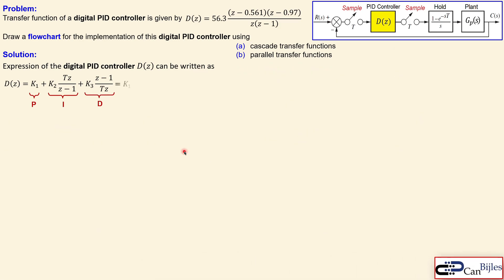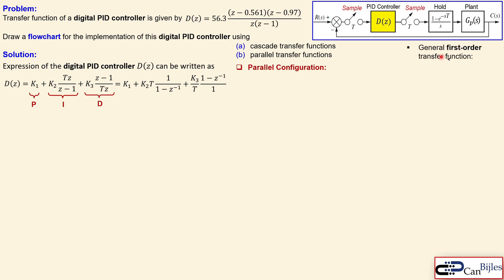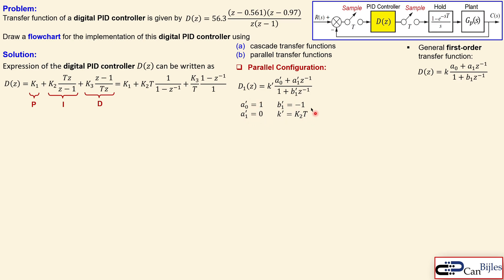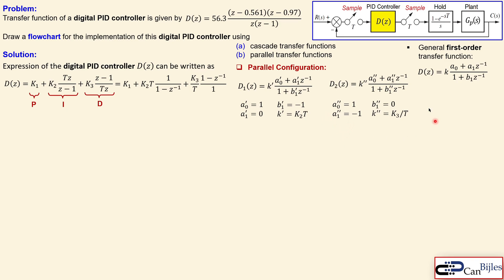Now looking at the parallel configuration, recall that the expression has three terms. The parallel configuration uses first-order transfer functions — one each for the P, I, and D terms. The general first-order transfer function form is used for the I and D parts, with coefficients a0, a1, b1, and gain k. A prime designation refers to the I element and a double prime designation refers to the D (derivative) element.